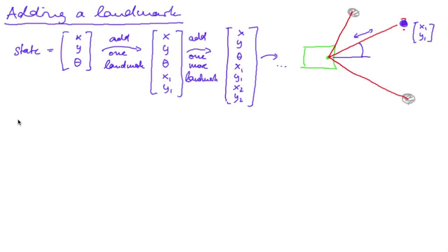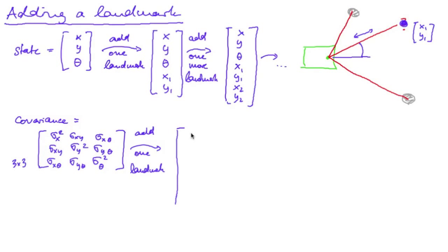Now, what happens to the covariance matrix? Well, this is initially a 3x3 matrix containing the variances and covariances. And now, if I add one landmark, I will still have this 3x3 submatrix here, but I will have two more state variables. So this will be a 5x5 matrix. And how shall I initialize all those new elements?